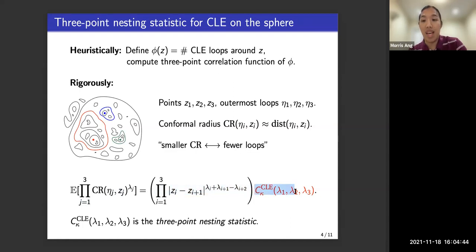What's difficult though is obtaining this constant here, which only depends on the lambdas. And this constant is what I will call the three-point nesting statistic of CLE.